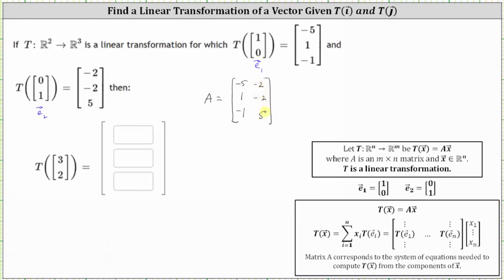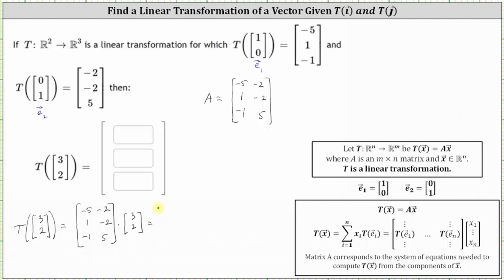Now that we have matrix A, we can determine the transformation of the vector (3, 2). The transformation of the vector (3, 2) is equal to matrix A that we just found times the vector (3, 2). And because we're mapping to R3, we know the result is going to be a 3 by 1 matrix.